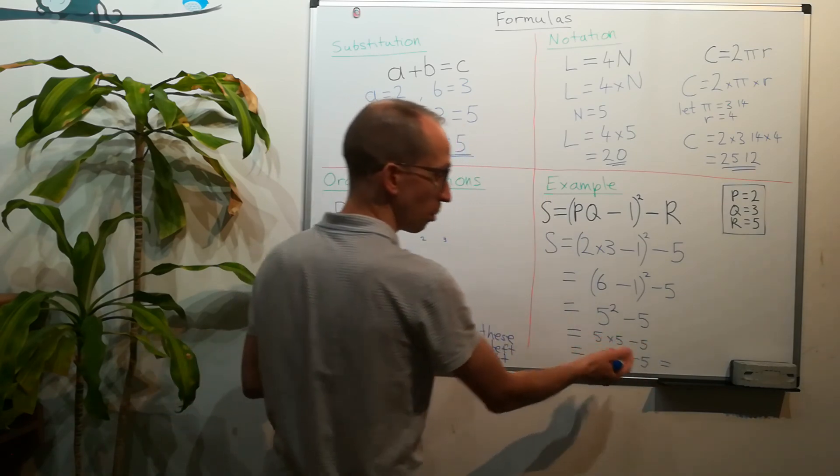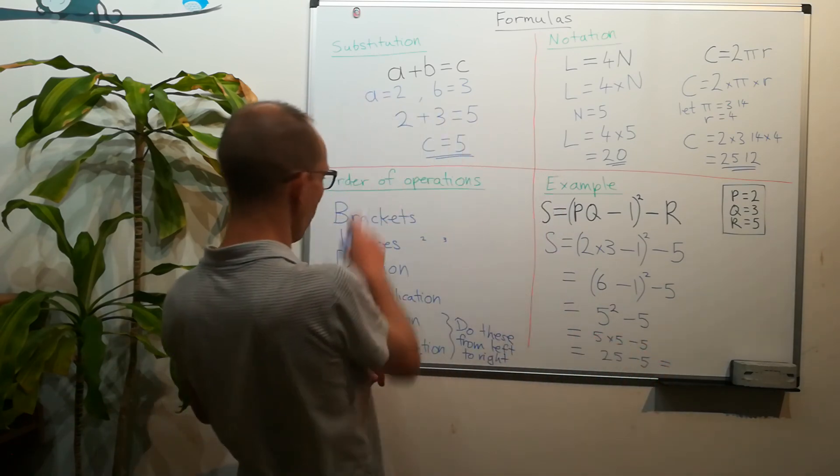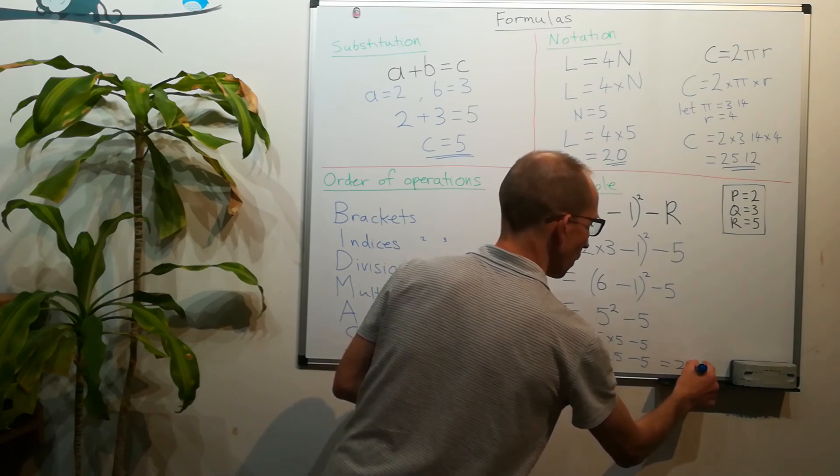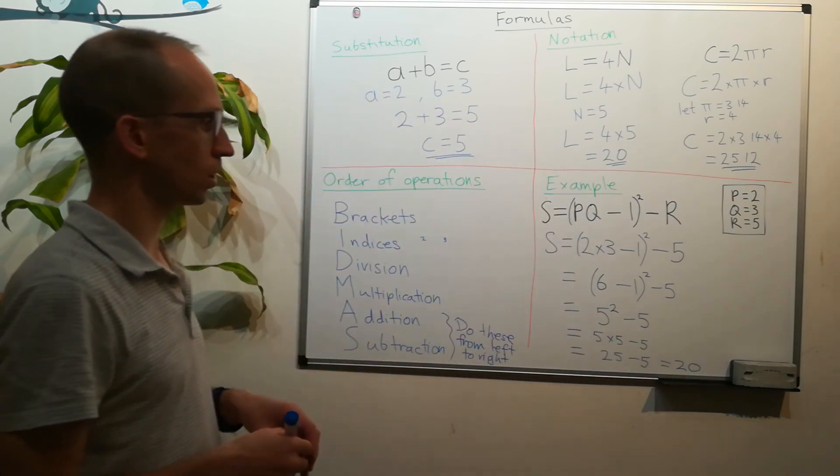Now all that we've got left is a minus so we don't have to worry about what order we're doing anything. And that's going to give us an answer of 20.